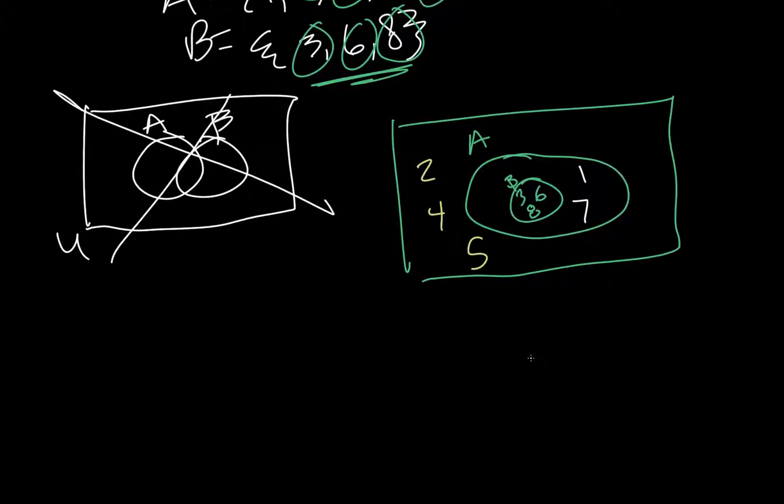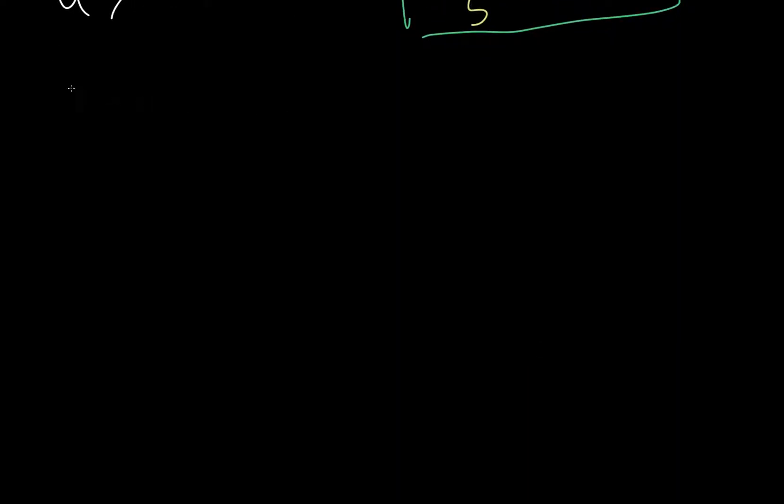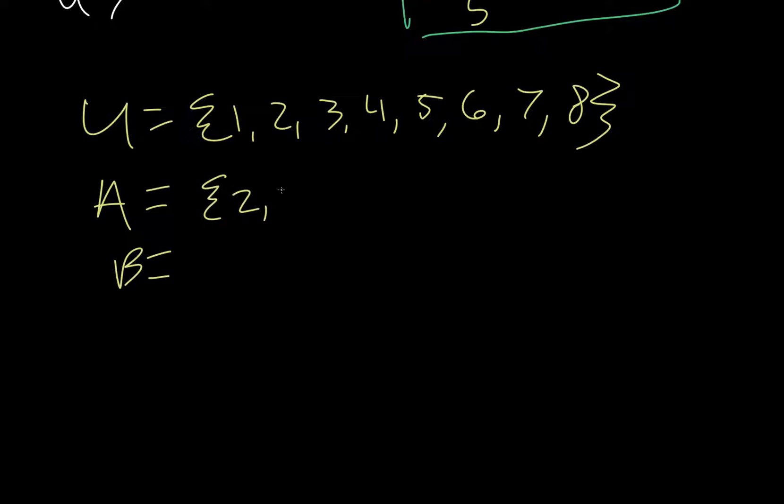Now, we have one more. So, I'm gonna write that universal set one more time. One, two, three, four, five, six, seven, eight. And then, we're given a different A and B on this one. So, two, four, eight. And one, three, five.